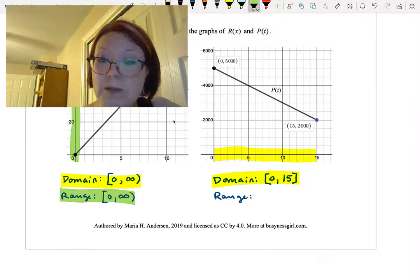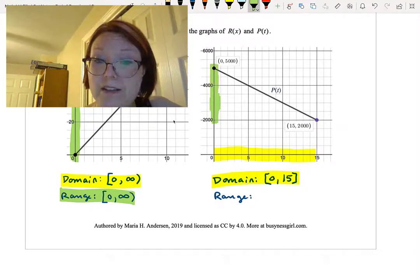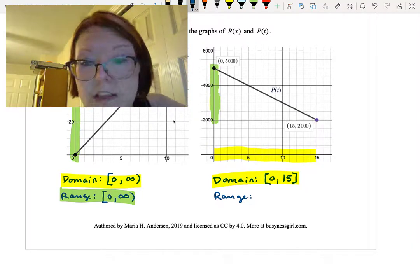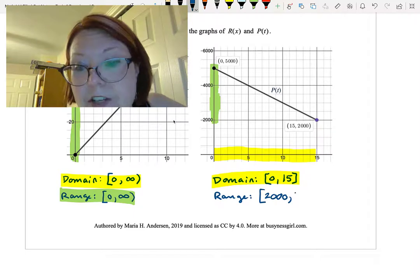The range corresponds with the allowed values on the y-axis, which is going to span from 2000 to 5000. So our range is going to be the lowest y value, which is left bracket 2000 to the highest y value, which is 5000 right bracket.